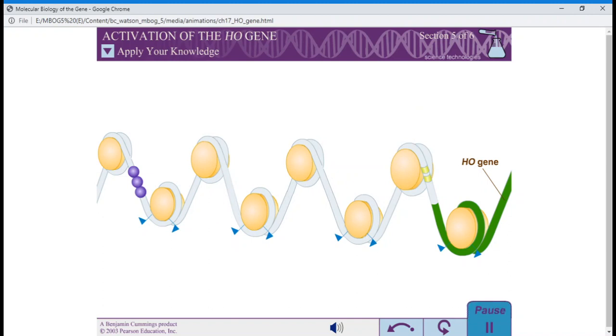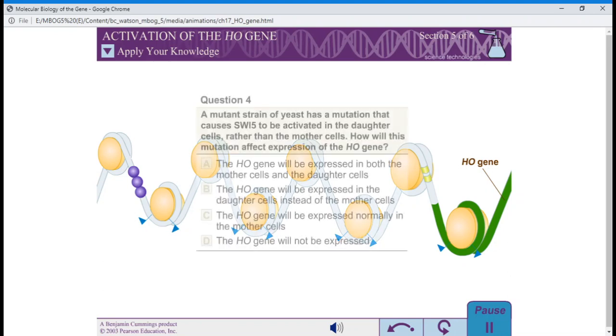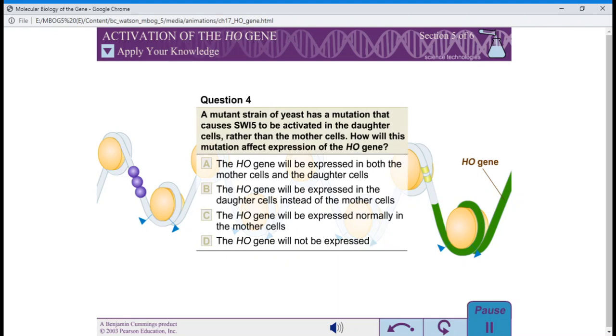Question 4. A mutant strain of yeast has a mutation that causes SWIFI to be activated in the daughter cells rather than the mother cells. How will this mutation affect expression of the HO gene?